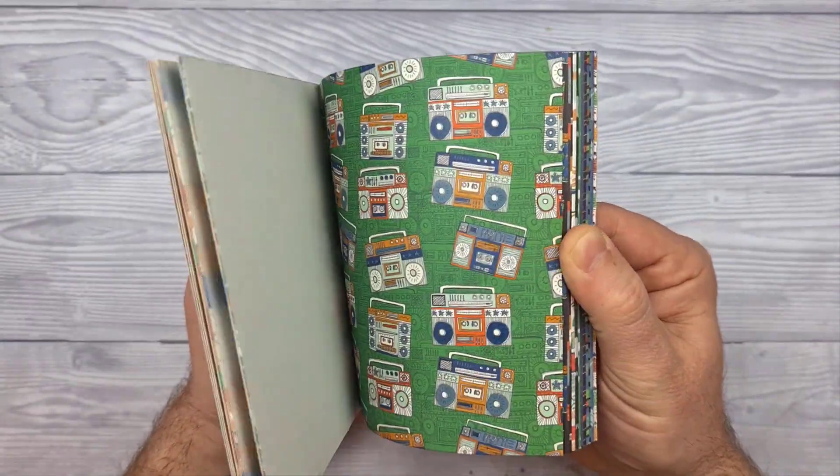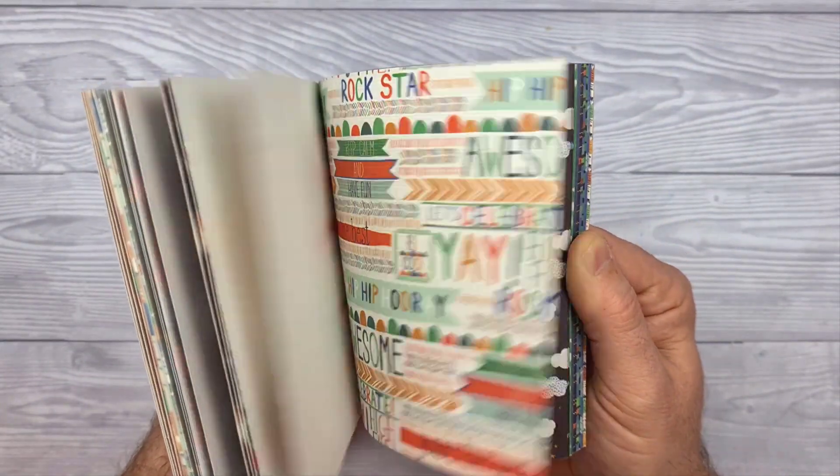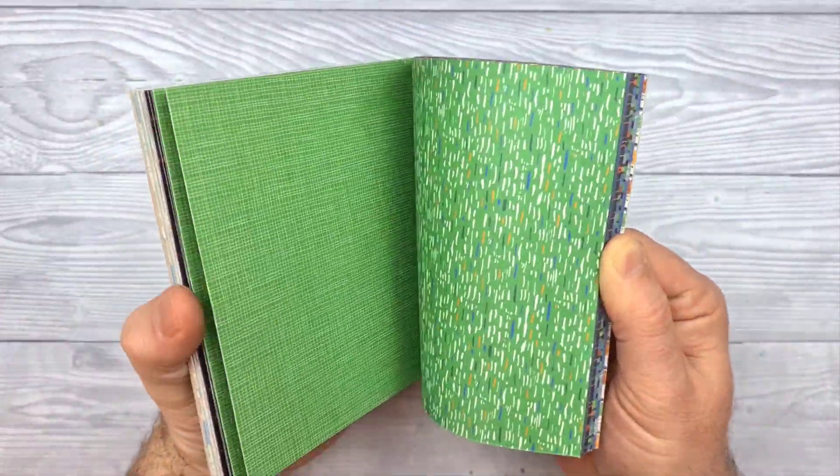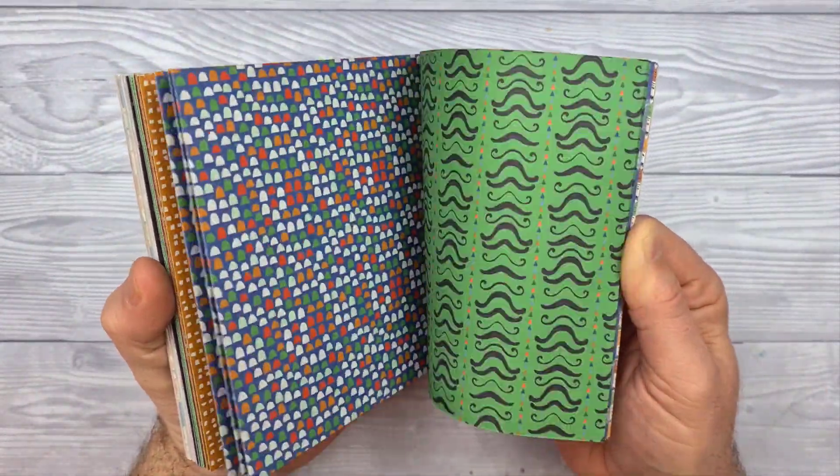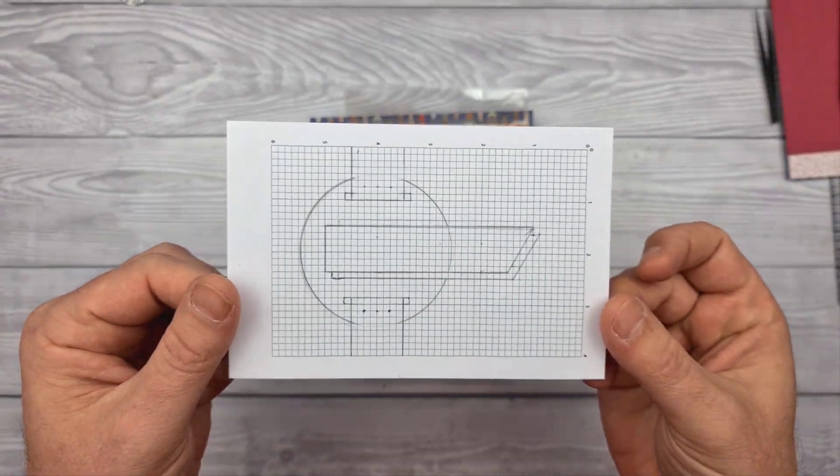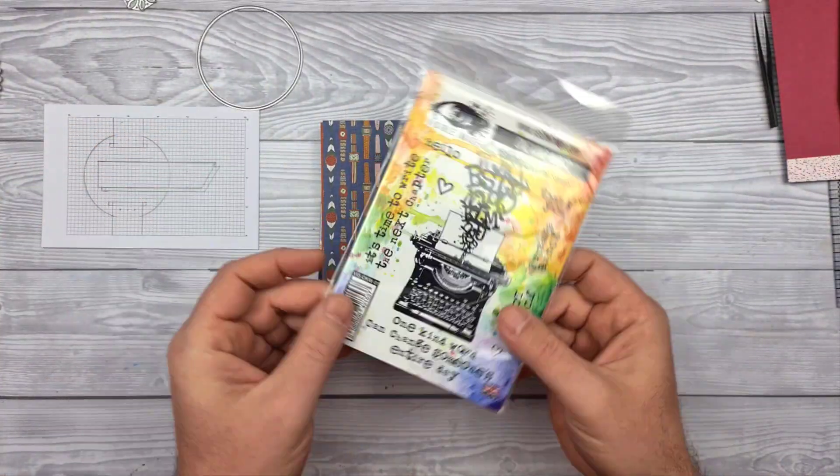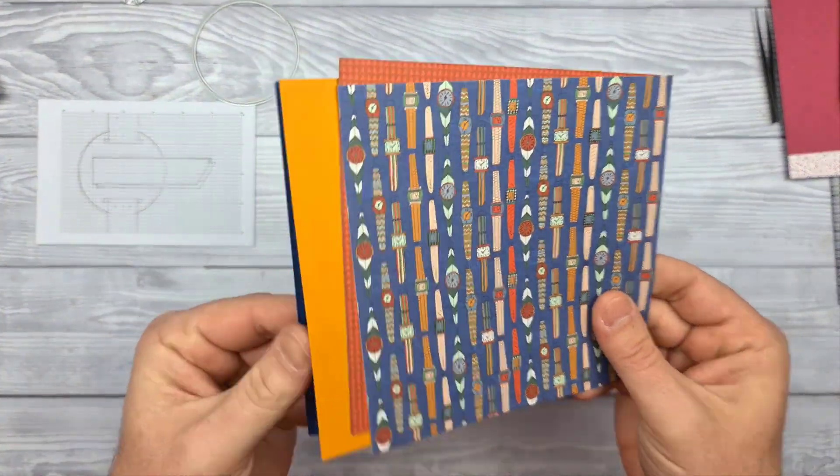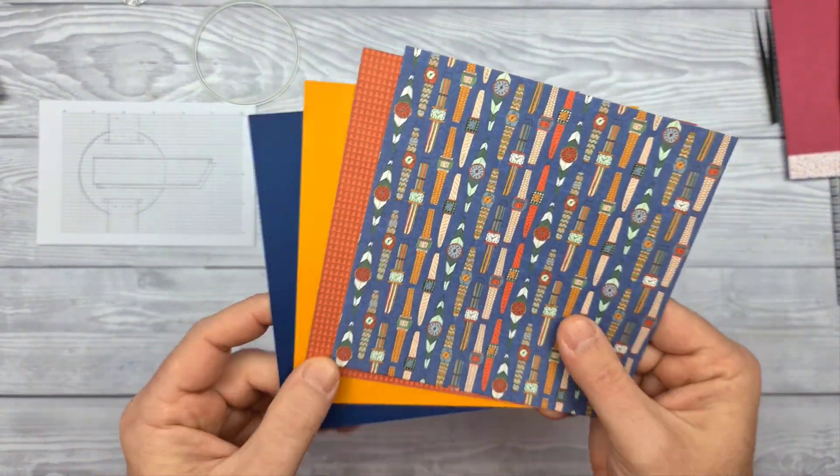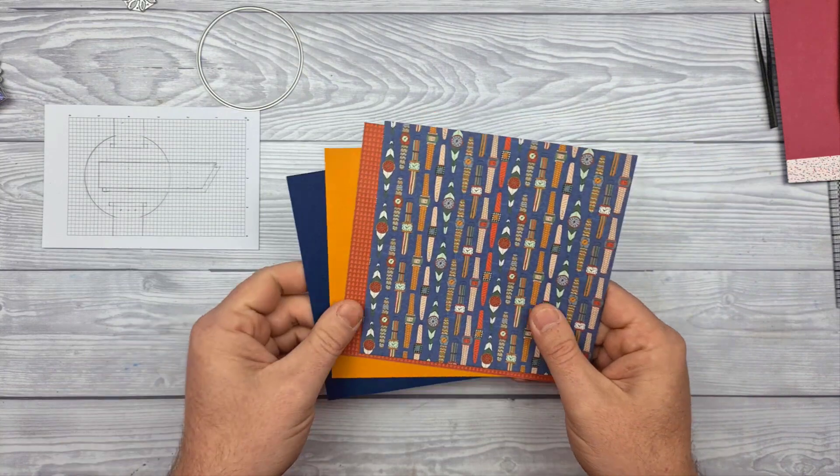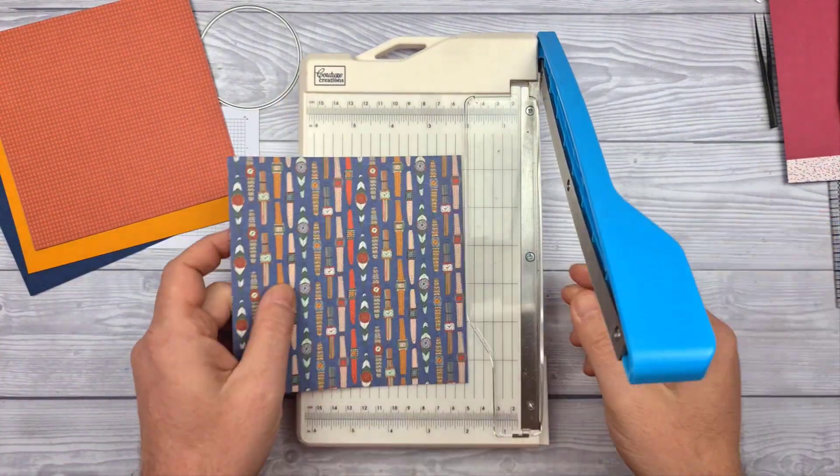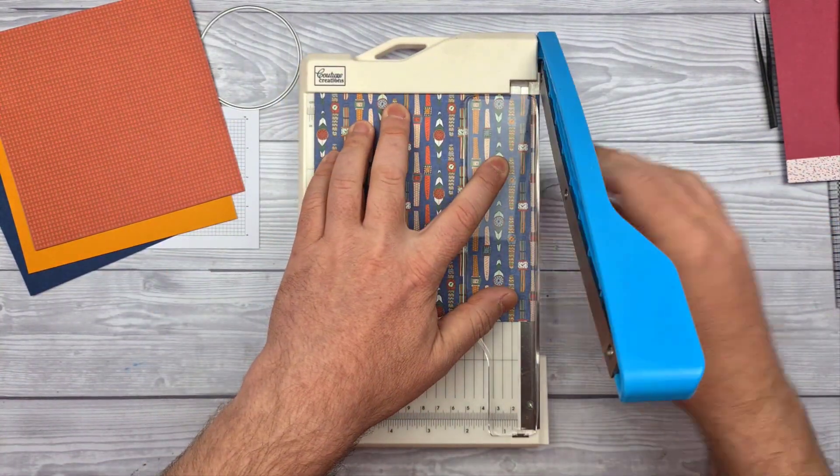The papers that I will be using are from the Grand Plans Pad by First Edition. This is a 6x6 paper pad and has many different patterns. This is the layout that I will be using and the sentiment comes from Visible Image. And these are the papers that I selected along with some solid colour cardstock sheets. And that's not easy to say.